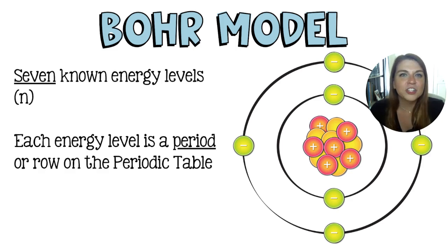To our current knowledge, there are seven known energy levels and each energy level corresponds to a period on the periodic table. A period on the periodic table is just one of the horizontal rows that run side to side.